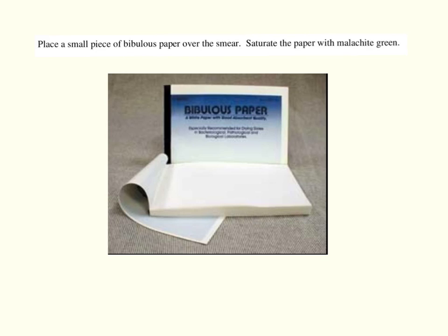Some lab manuals say to place a small piece of bibulous paper over the smear and then saturate it with Malachite Green. This is highly absorbent paper that helps keep the Malachite Green from drying out during the staining process. If your professor requires it, go ahead and use the bibulous paper; however, in this lab we will skip this step.